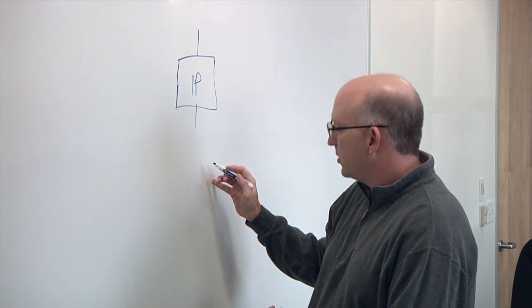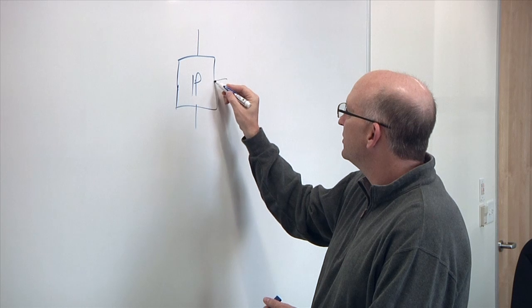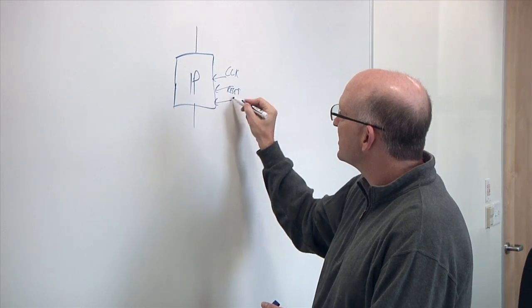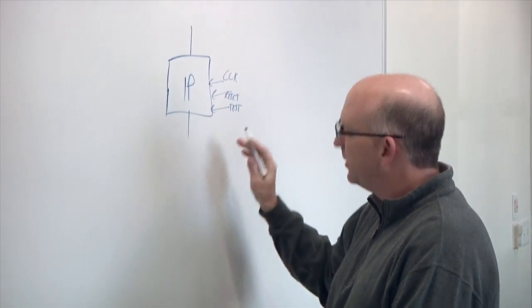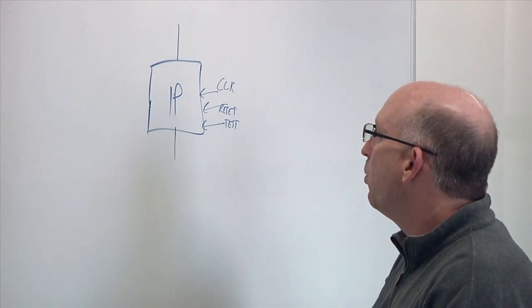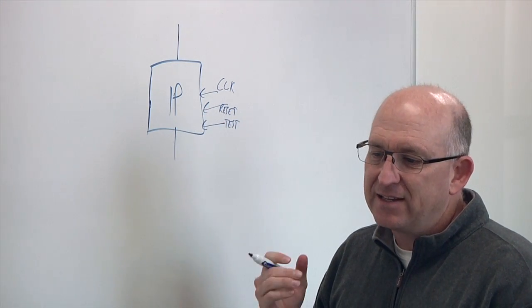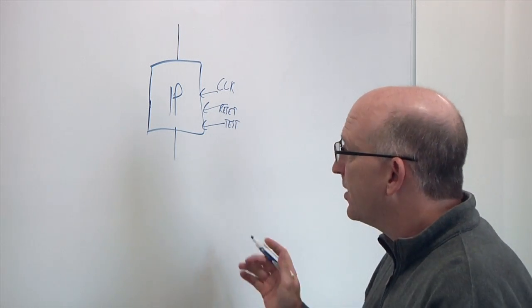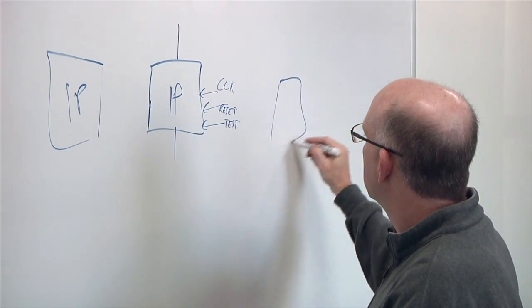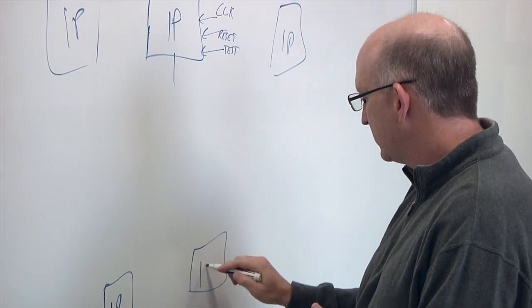Typically that block has a set of interfaces on it. There's clock signals coming in and reset signals and any variety of test signals, but we really don't focus much on those in the early phases of an SOC design. What we're really worried about is how do I take this block, which I didn't design, and understand enough about it that I can integrate it together with other IP functions into a very large chip.